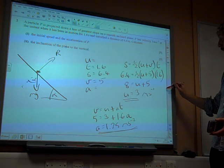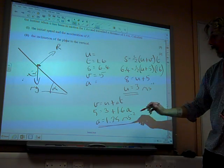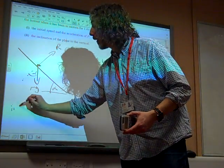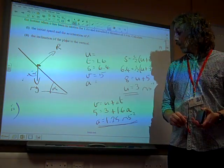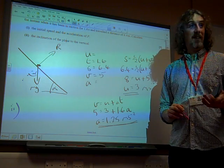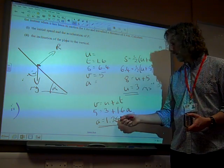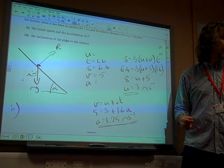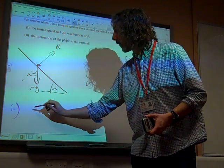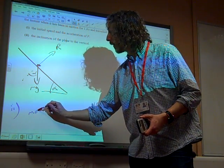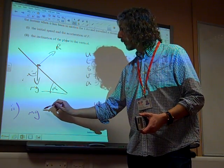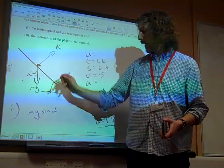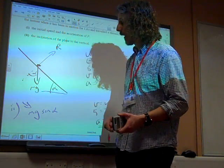Part 2. The inclination of the plane to the vertical. Well, we see what we've got here now. We've got that this accelerates with an acceleration of 1.25. So using Newton's second law on this, we've got that Mg sin alpha. That's the component down the plane. I'm resolving down the plane in that direction.